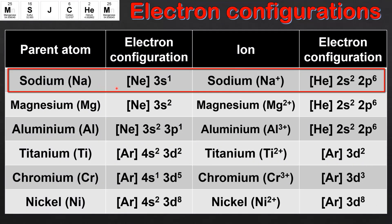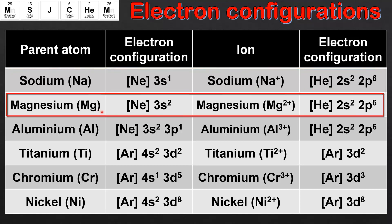Sodium loses its one electron in the 3s sublevel to form a 1+ ion, and by doing so it gains the electron configuration of a noble gas. Next is magnesium which has the electron configuration Ne3s2. The magnesium atom can lose these two electrons in the 3s sublevel to form a 2+ ion, and its electron configuration is the same as that of the sodium ion.